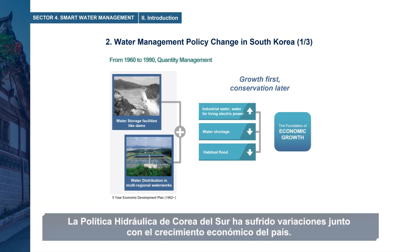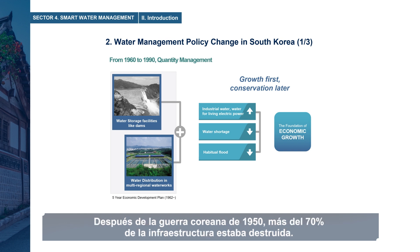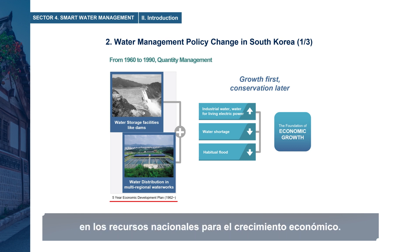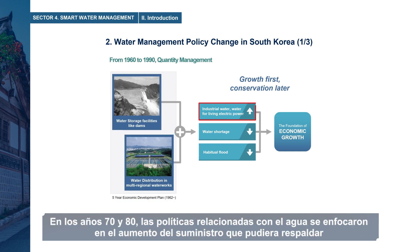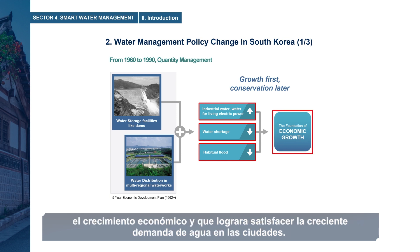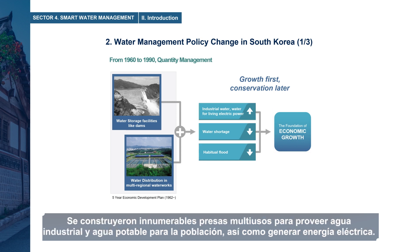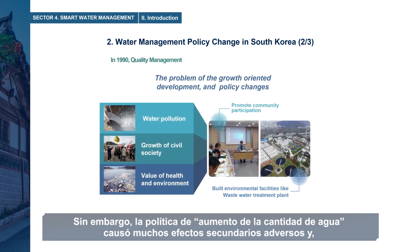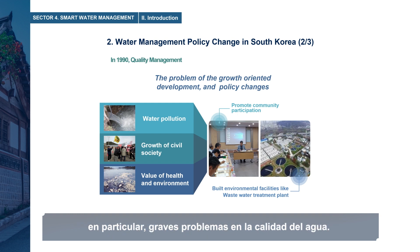South Korea's water policy has seen variations along with the country's economic growth. After the Korean War in 1950, more than 70% of infrastructure was destroyed. In the 1960s, the Korean government started a five-year economic development plan focusing on national resources for economic growth. In the 1970s through 1980s, water-related policies focused on supply augmentation to support economic growth and meet increasing water demand in cities. Many multipurpose dams were built to provide industrial water, tap water for the population, and generate electric power. However, the water quantity augmentation policy caused many adverse side effects, and particularly severe problems in water quality.